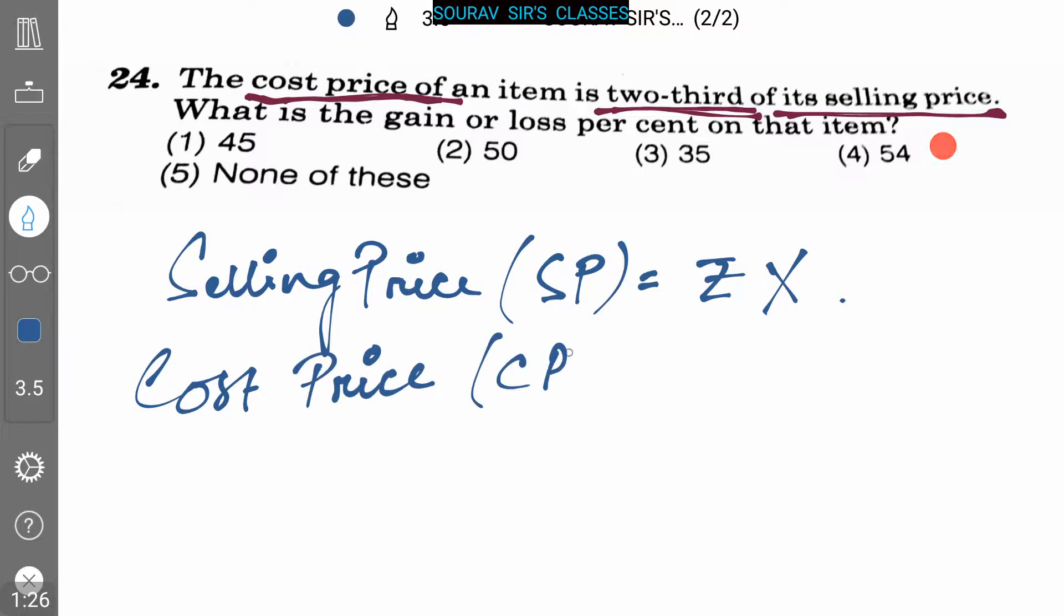So the gain must be x minus 2x/3, which equals x/3.